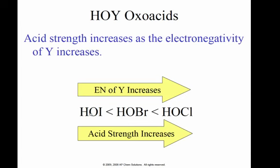So if you'll notice, I have HOI, HOBr, and HOCl. Well, chlorine is the most electronegative out of these three and therefore the stronger acid. So it's kind of the opposite of if the oxygen wasn't there. If I had HCl, HBr, and HI, HI is the stronger acid. Once I put an oxygen in there, it's the one that's most electronegative.